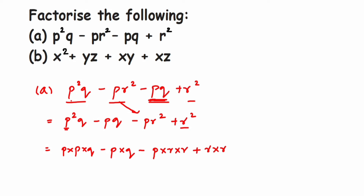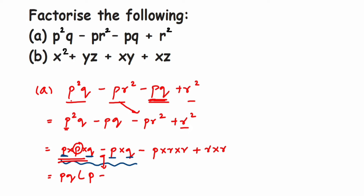Looking at the first two terms, I can take one p and one q — that is p q — as common. p q is present in both terms. If I take p q outside, from the first term one p is left, giving me p. From the second term, nothing is left, so one will be present there — not zero, because that would make the entire term zero. So I get p q times (p minus 1).